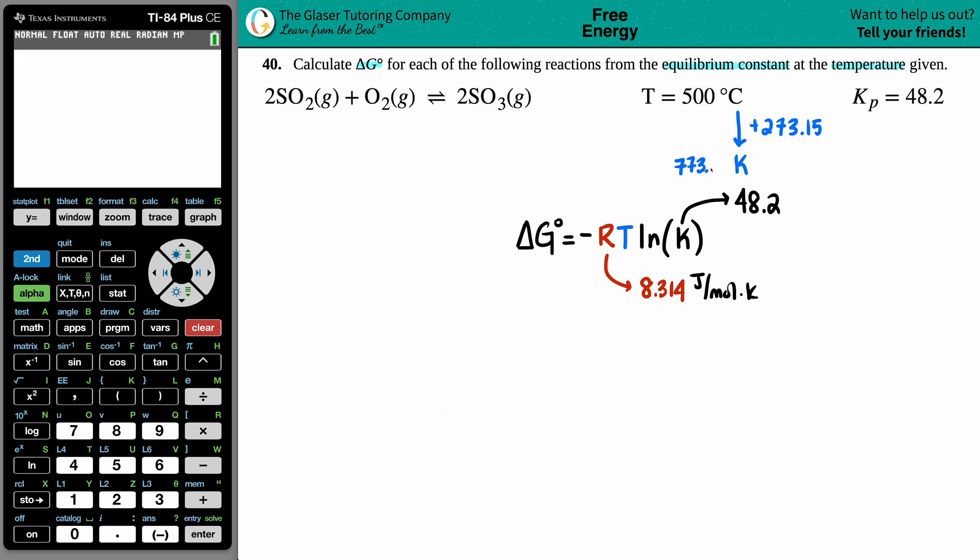That's the number that's going in here. We have all the variables. Let's write it out: ΔG equals negative times 8.314 times the temperature, which in that case is 773.15.